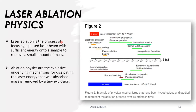Coming to the next part: laser ablation physics. Laser ablation physics describes how much time a laser takes to do its work — for example, reshaping the cornea, which is our main topic. Laser ablation is basically the process of focusing a laser beam with sufficient energy onto a sample to remove a small amount of mass. Ablation physics involves the explosive underlying mechanism for dissipating the laser energy that was absorbed, and the mass is removed by a tiny explosion. The laser fluence is up to 10^12 to 10^17 W/cm². Physical mechanisms highlighted in bio studies represent the ablation process over 16 orders in time.